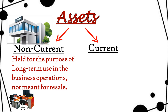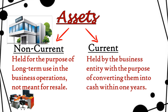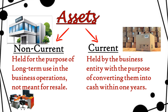Those are called non-current assets. Current assets are those assets which you can normally convert into cash within one year — you resell them or sell them within one year. For example, stock is a current asset. The stock you have, you don't use it long-term — you want to sell it and convert it into cash.